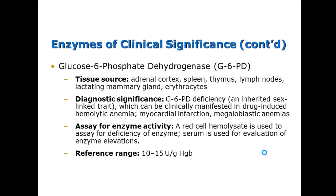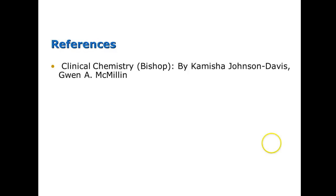Glucose-6-phosphate dehydrogenase (G6PD) is found in the adrenal cortex, spleen, thymus, lymph nodes, lactating mammary glands, and erythrocytes. It is of diagnostic significance with a G6-phosphate dehydrogenase deficiency, which can lead to megaloblastic anemias. The reference range is 10 to 15 units per gram of hemoglobin. That concludes our section on enzymes.